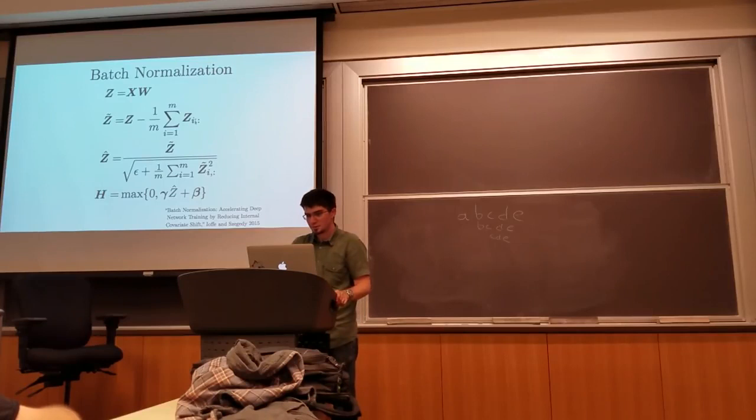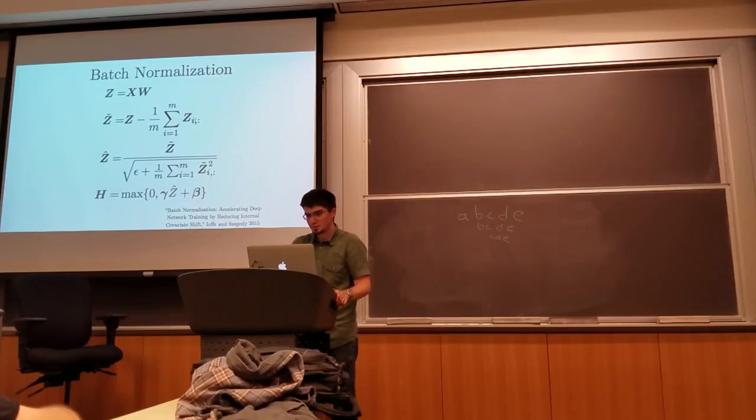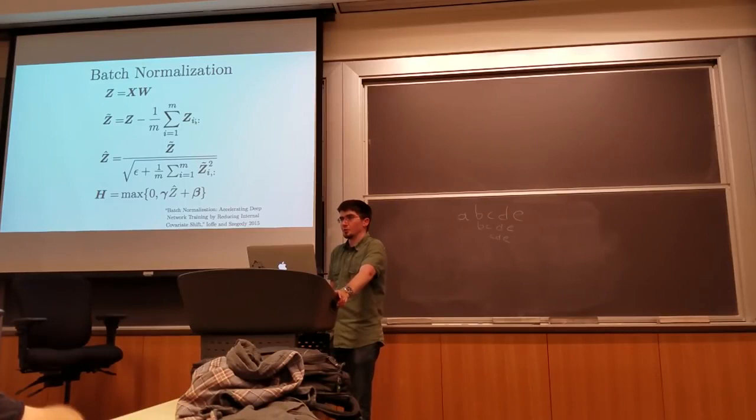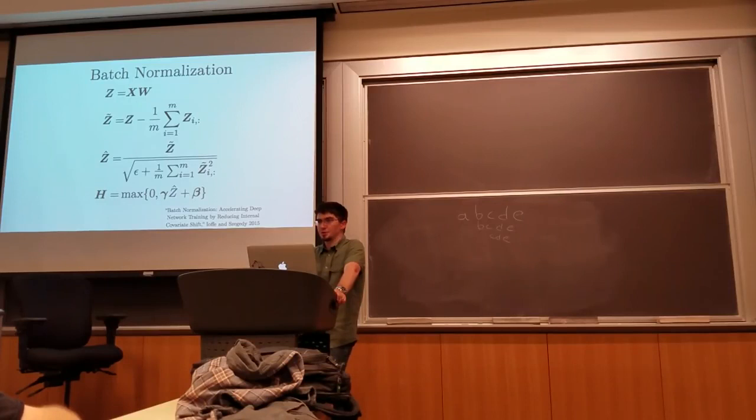Gamma and beta are usually different for every layer — they are learned parameters. You would typically start with beta set to zero and gamma set to one, and then they get learned during training.